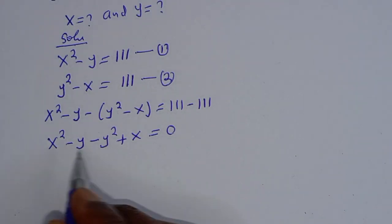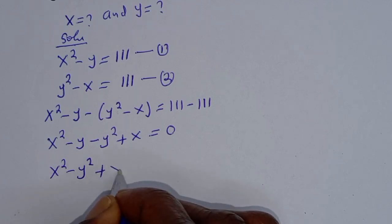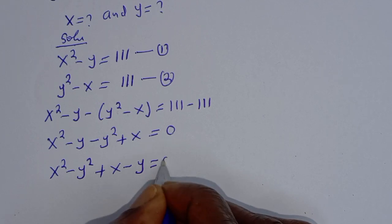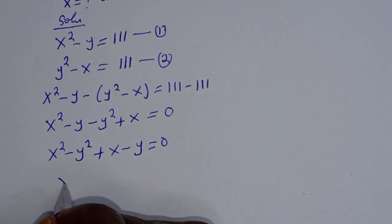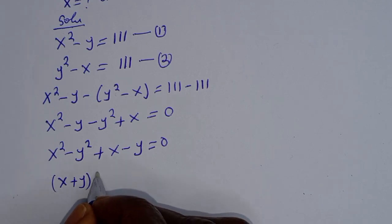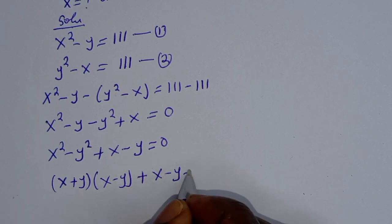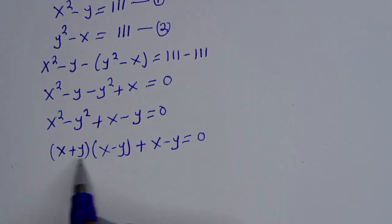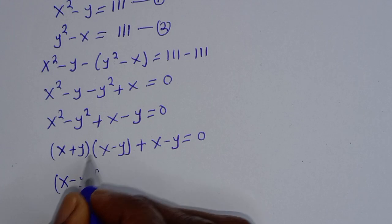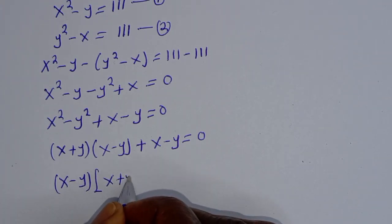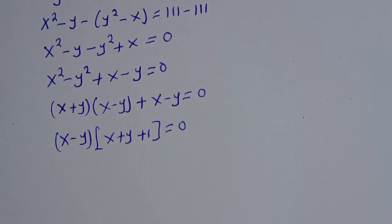Now we can simplify this. We have x squared and y squared terms. This gives x squared minus y squared plus x minus y is equal to 0. x squared minus y squared is in the form of a difference of squares, which can be written as (x plus y) multiplied by (x minus y), plus (x minus y), is equal to 0.